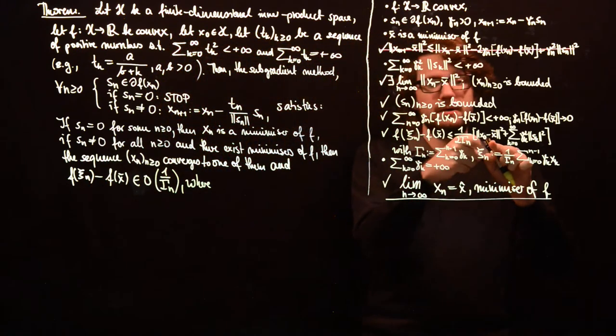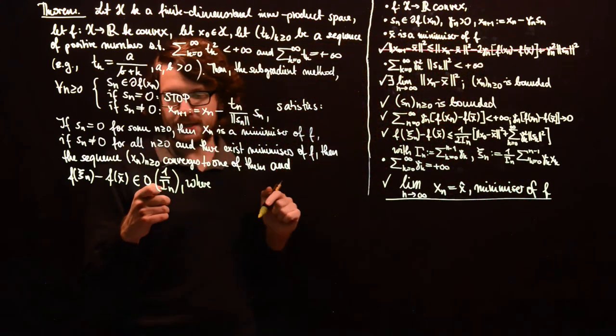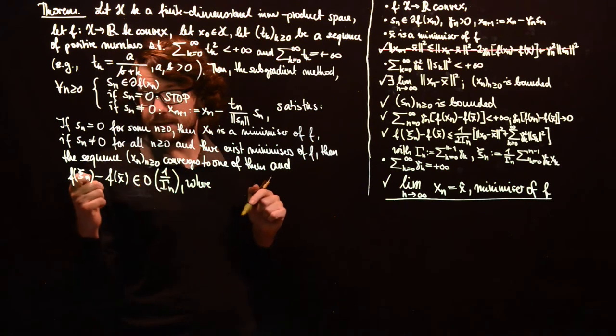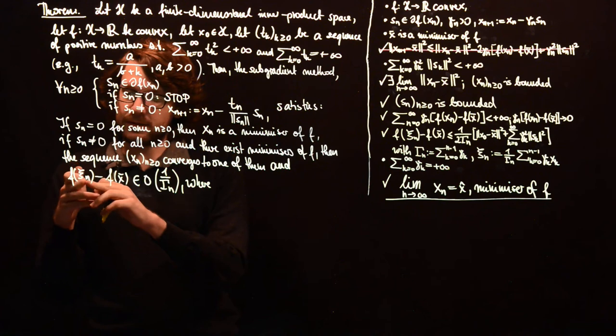Since we usually don't know the distance between our initial point and the solution, we just write that this is, or we can write this in big O notation.